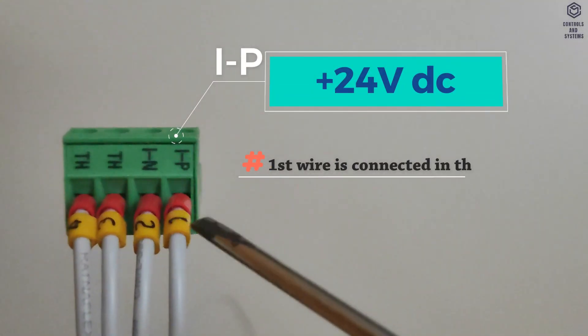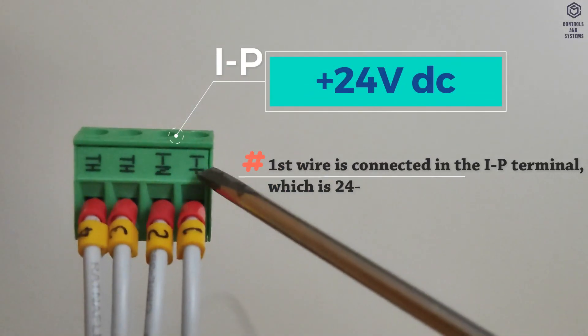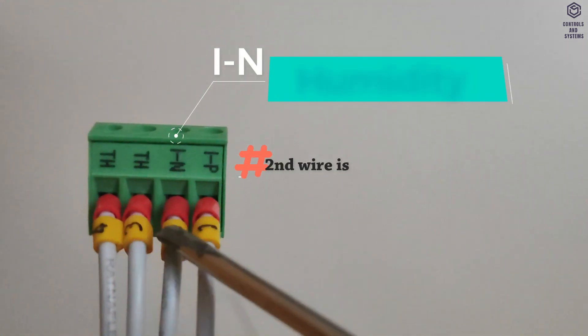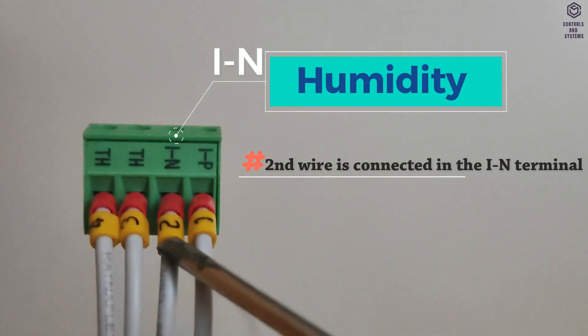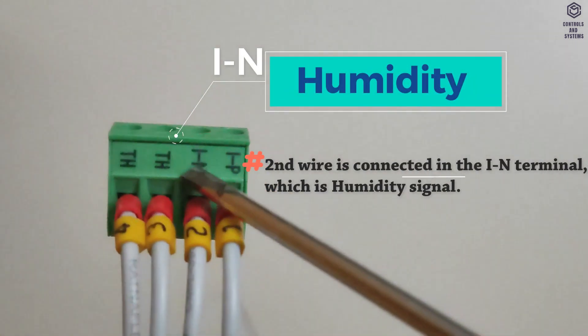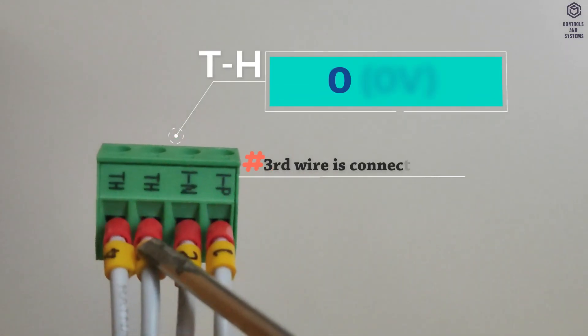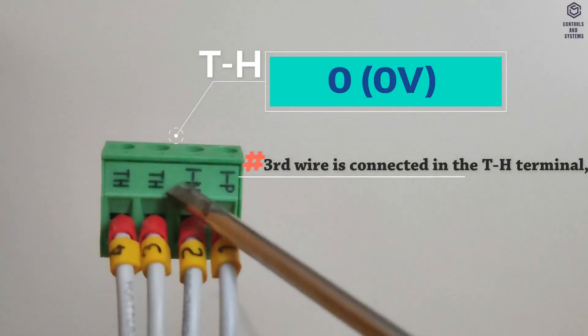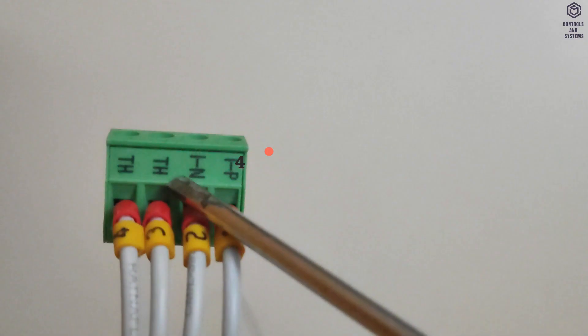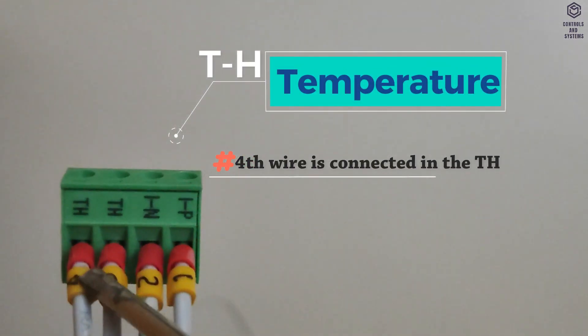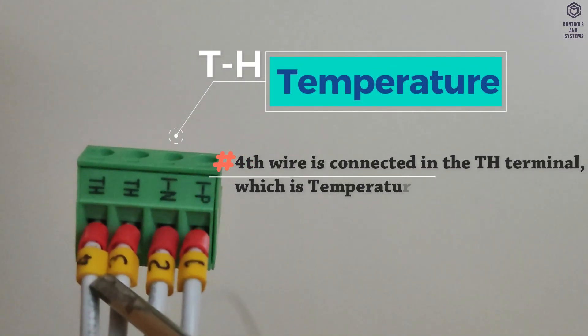The first wire is connected in the IP terminal, which is 24 Volt. The second wire is connected in the IN terminal, which is humidity signal. The third wire is connected in the TH terminal, which is zero Volt. The fourth wire is connected in the TH terminal, which is temperature signal.